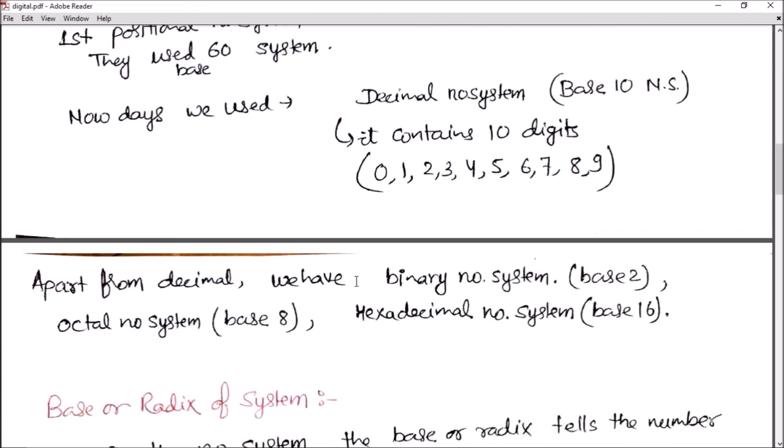Apart from decimal number system, there are other number systems: binary number system which has base 2, octal number system base 8, and hexadecimal number system base 16.